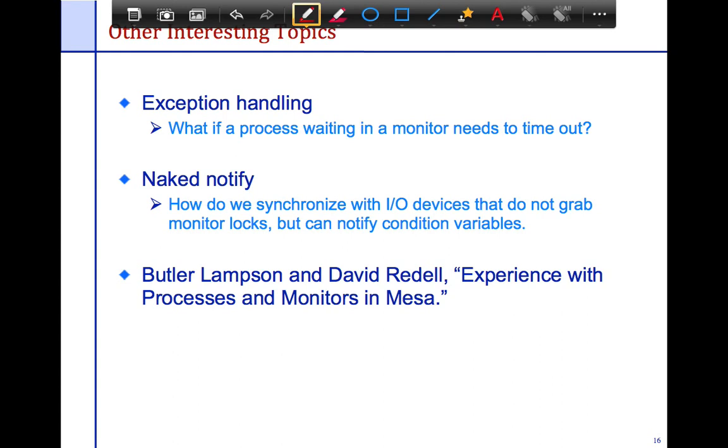Other topics that are challenging with monitors is exception handling. So what if a process waiting in a monitor needs to get out? So without notifying...does it have to notify everyone else around the system? Then there are naked notifies where we miss out on a notify because we aren't in the queue yet. How do we synchronize with devices that do not grab monitor locks but can notify conditional variable? So I don't use the lock itself but I start notifying other systems. And in general, a lot of other issues which are carried over from an artifact of using locks.